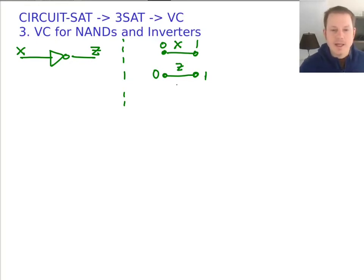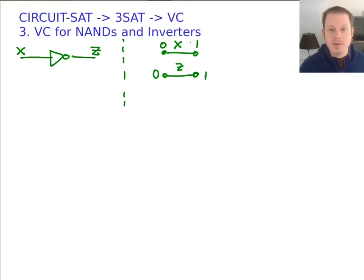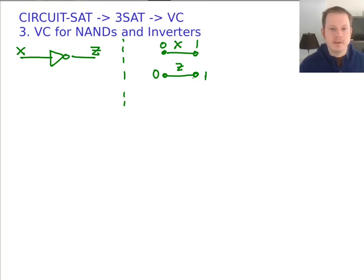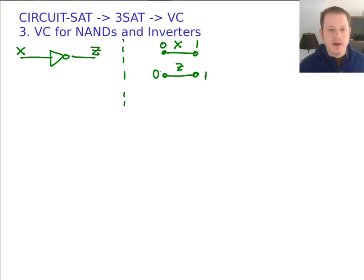But that's not enough to represent the circuit correctly, because in the inverter it's impossible for X and Z to both be true — yet in the vertex cover you could choose that and say you have a valid cover. So we have to add to the graph something that forces the inverter operation to be correct. The CNF formula for the inverter is: (X or Z) — one must be true — and (not X or not Z) — one must be false. For an inverter, one is true and one is false; that's how it works.